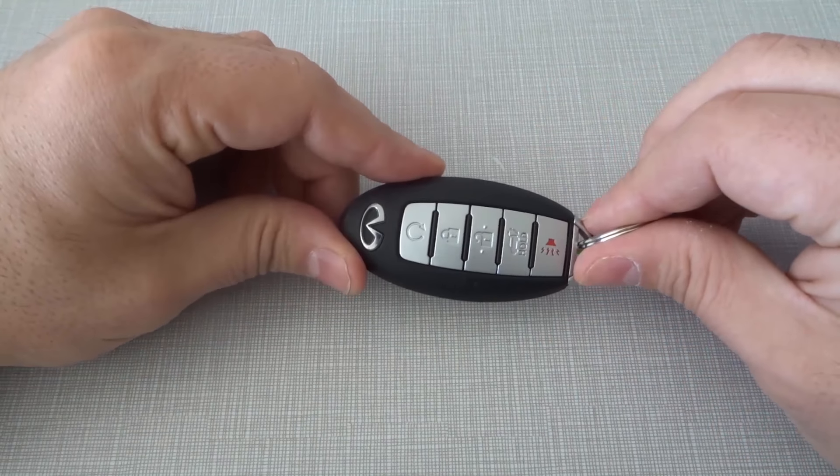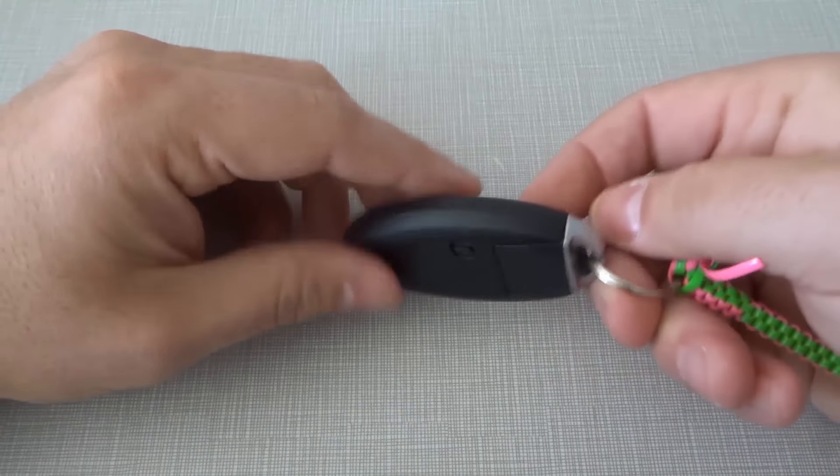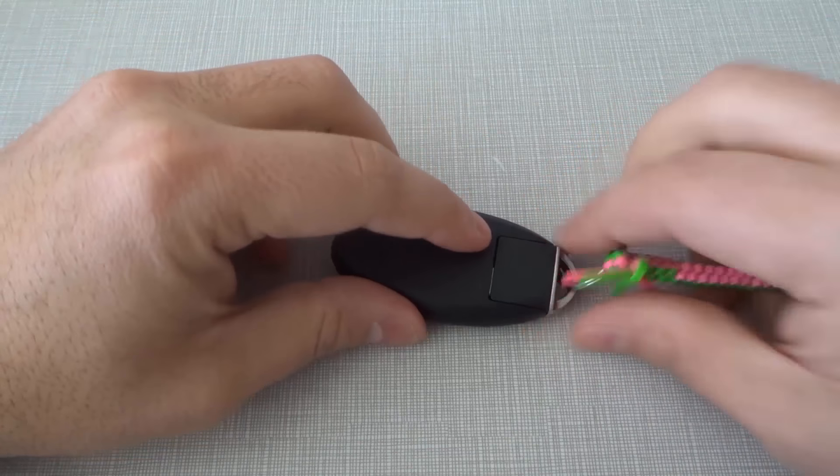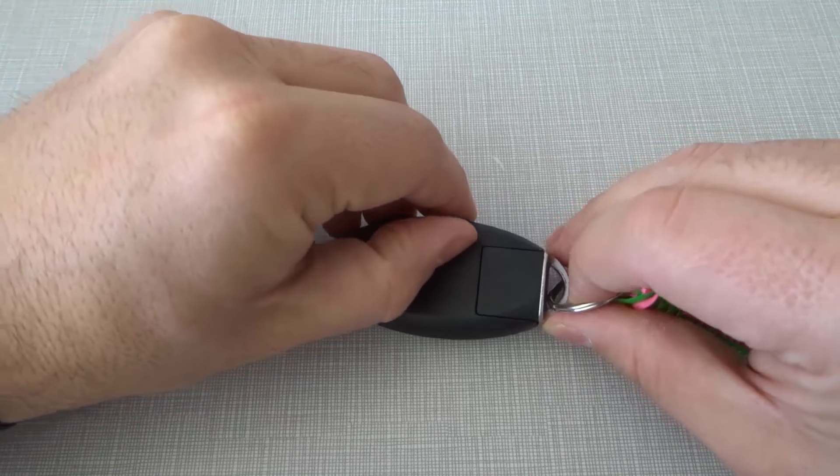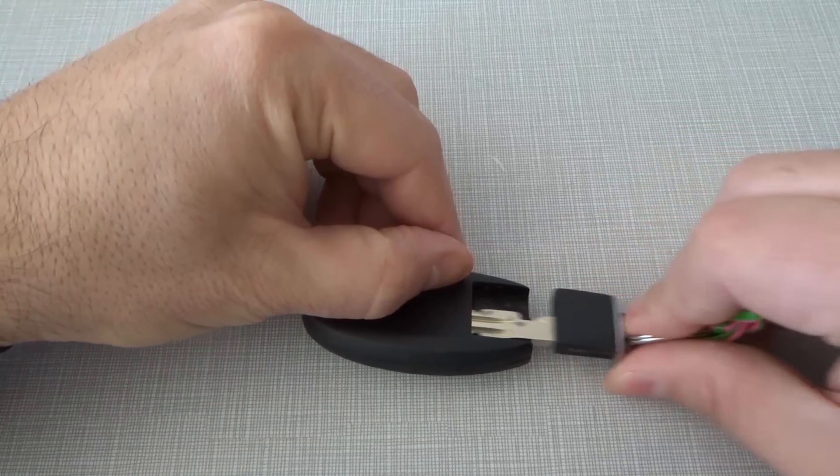As you can see right here, I have an Infiniti key fob. The first thing that you want to do is slide this and pull out the actual key. So I'm going to slide this to the side, pulling it towards the outside, and then I'm going to remove the key.